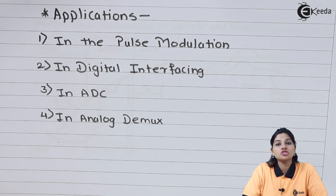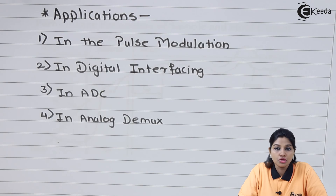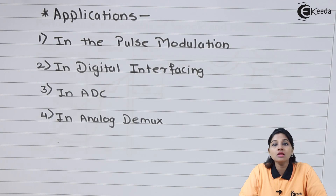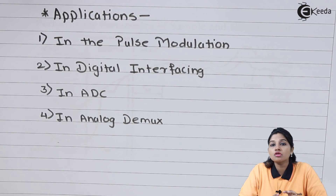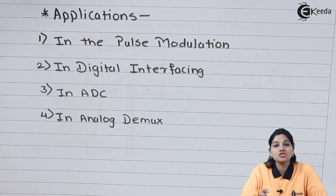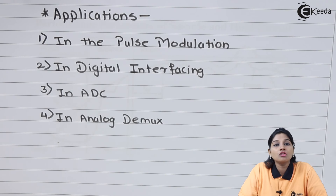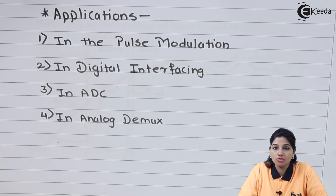Basically, the sample and hold circuit operation depends upon the position of the switch — that means whether the switch is on or off — and that is controlled by using a control voltage. The switch can be a BJT or MOSFET, and the operation has two processes: sampling process and holding process. Sampling is the process during which the output is sampled, and holding is the process during which the capacitor holds the value for a certain period of time. This is what the sample and hold circuit using Op-Amp is about.